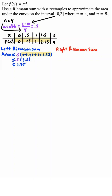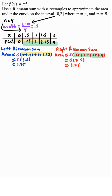To find the right Riemann sum, we're going to use the four right f of x values. Then the area is about 0.5 times the sum of these four values. Simplify this, you get 3.75. Now the actual area is going to be between 1.75 and 3.75.